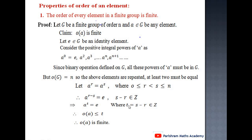To summarize: G is a finite group containing n elements, so among the powers of a, at least two must be equal. Therefore a raised to r equals a raised to s; transferring gives a raised to (r-s) equals the identity element, so a raised to t equals e where t = s - r. Therefore order of a is less than or equal to t, and thus order of a is finite.